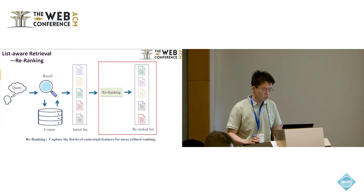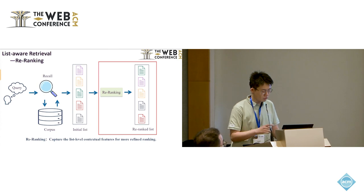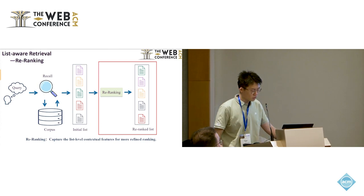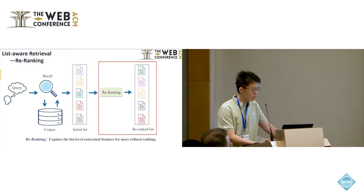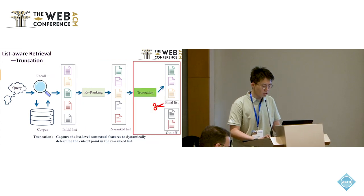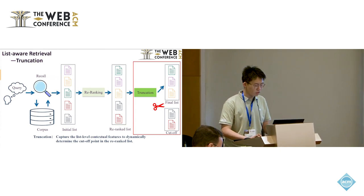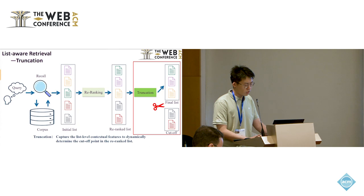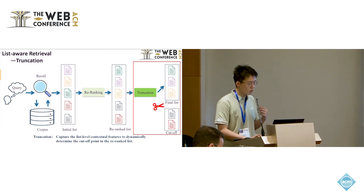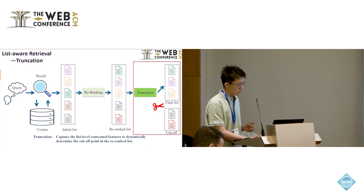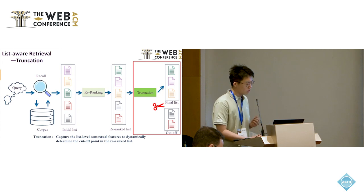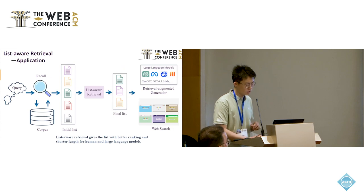First, please allow me to introduce the concept of List-Aware Retrieval, which mainly consists of two tasks. The first is Re-Ranking, which performs a more refined ranking of the initial ranked list retrieved from the large-scale corpus. It utilizes the list-level features of the entire list for ranking. The second task is Truncation, which aims to dynamically determine the optimal cut-off point of the ranked list. To achieve this, Truncation also needs to capture the list-level features of the entire list to return an optimal truncated sub-list.